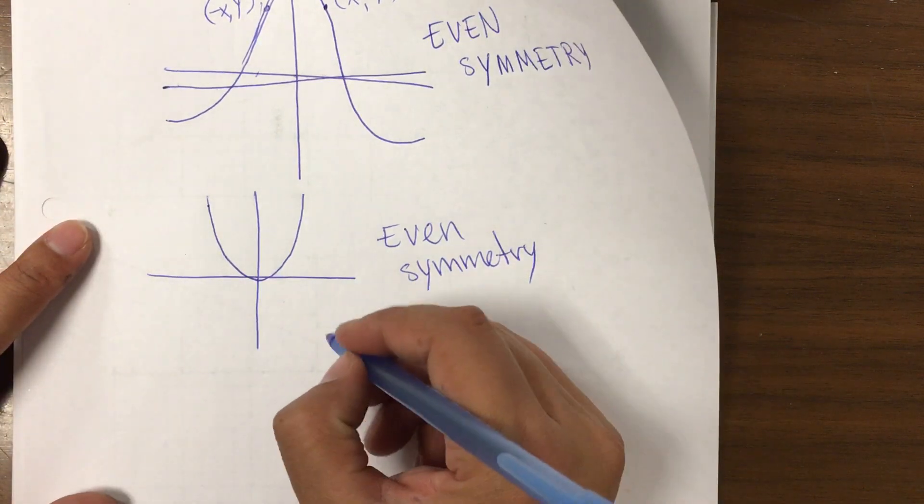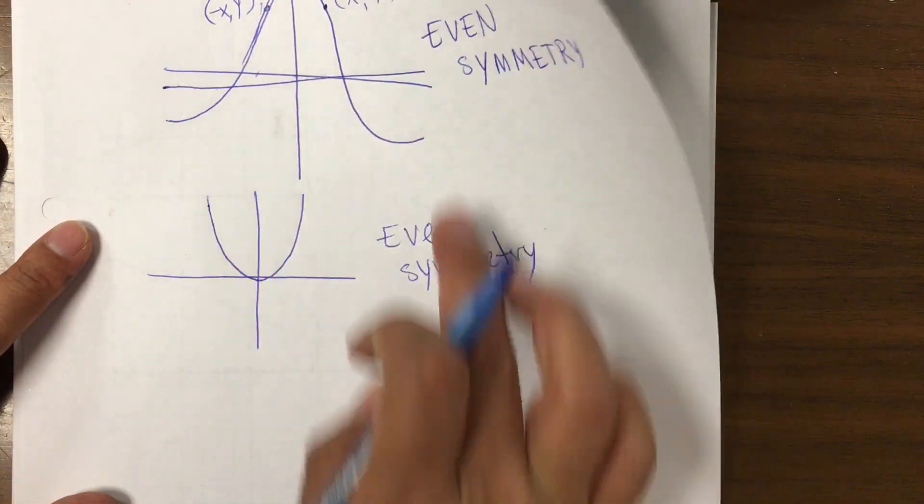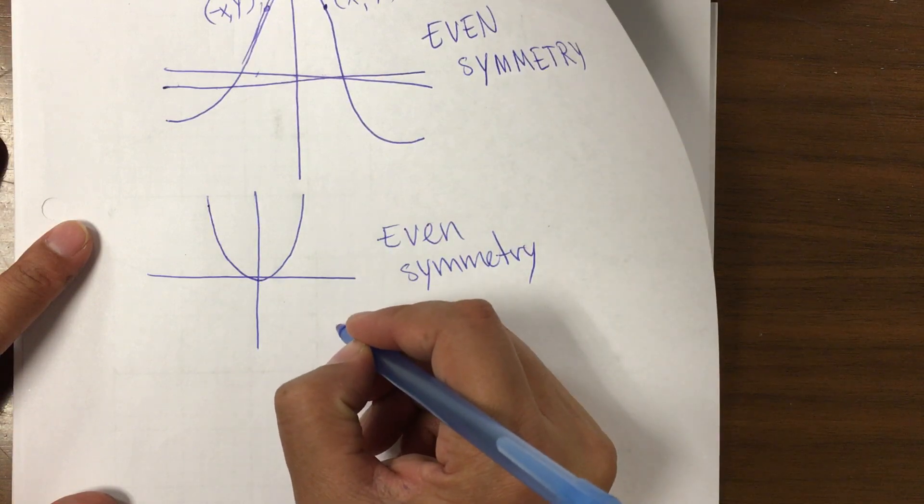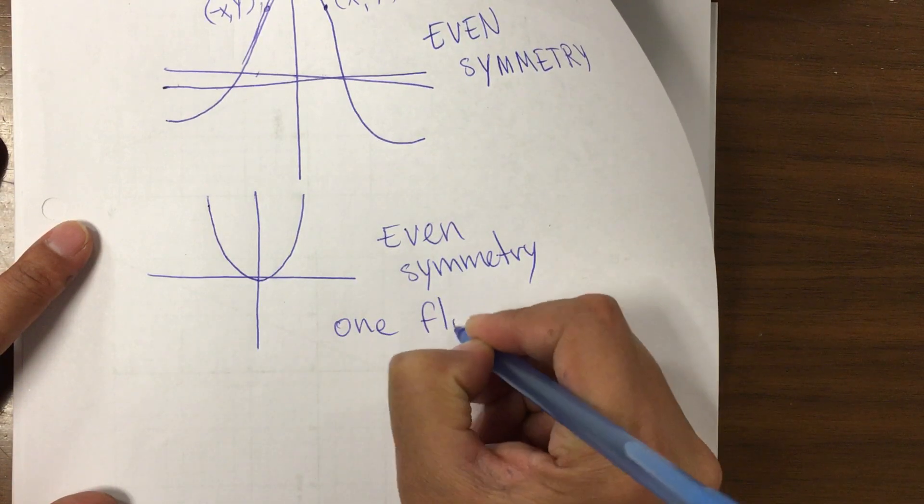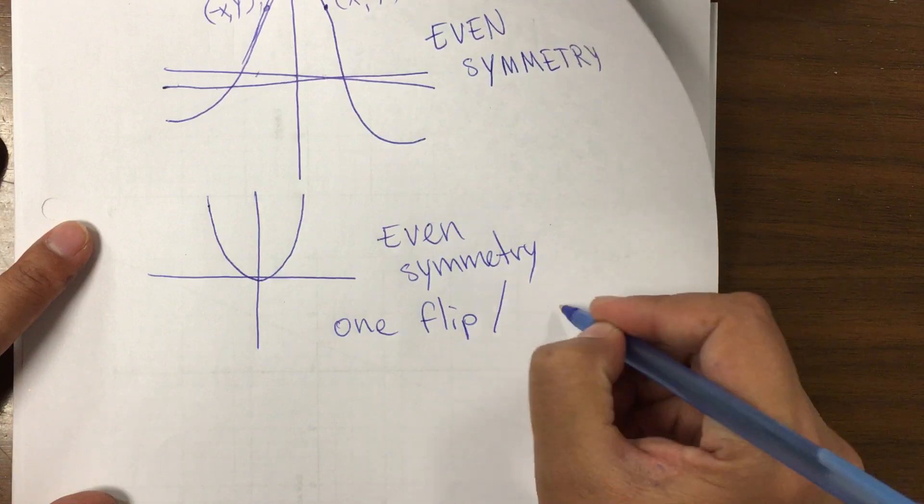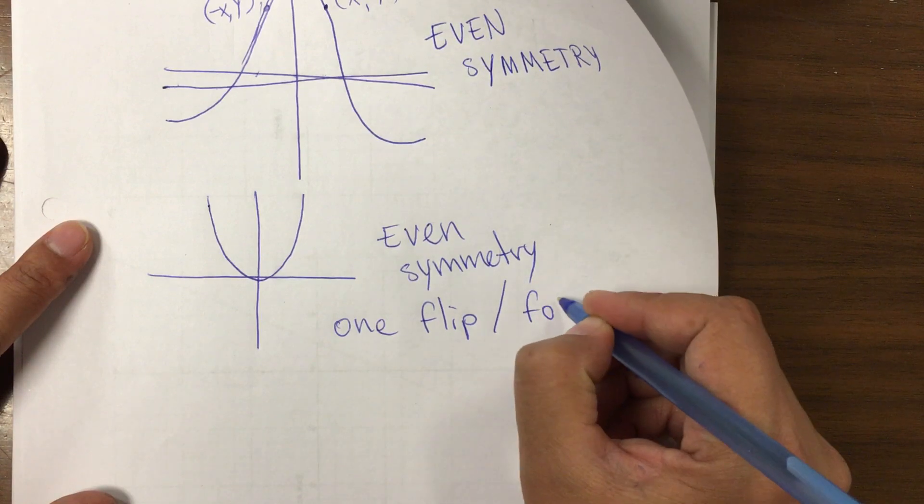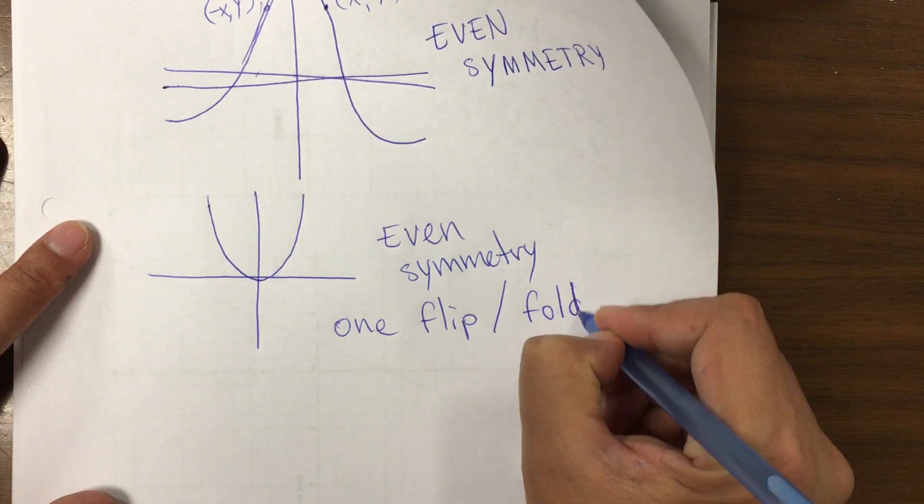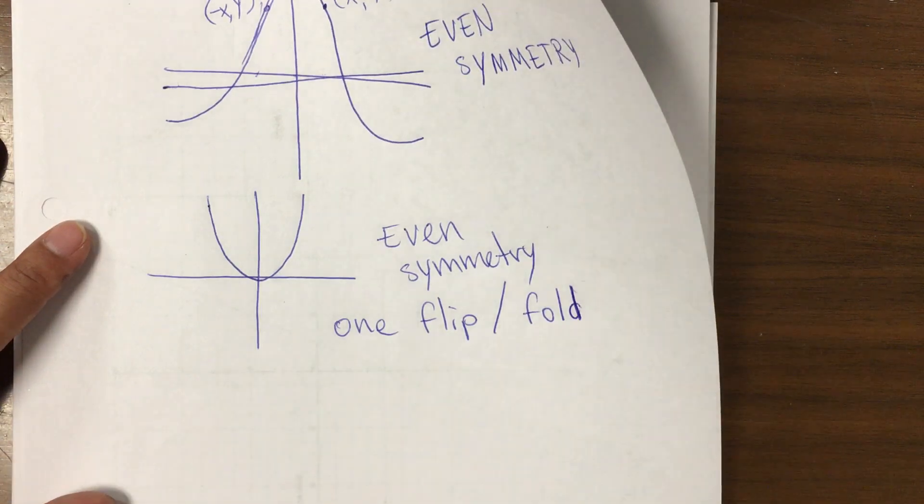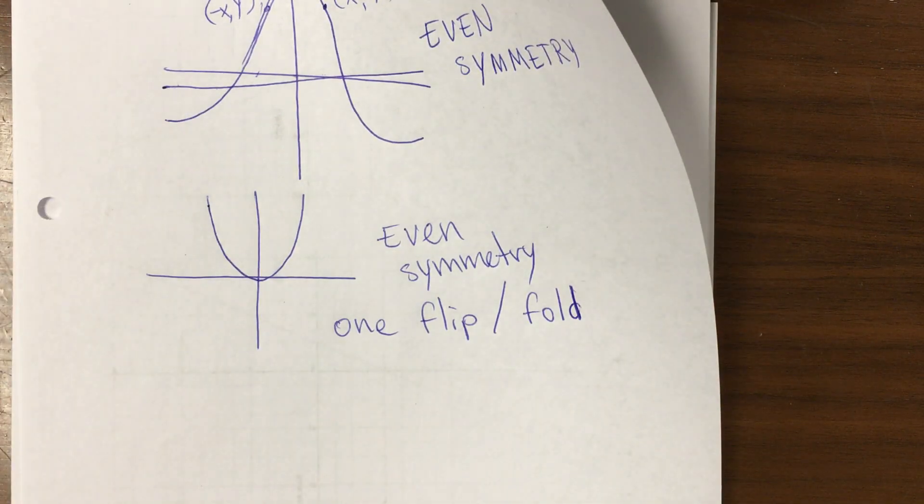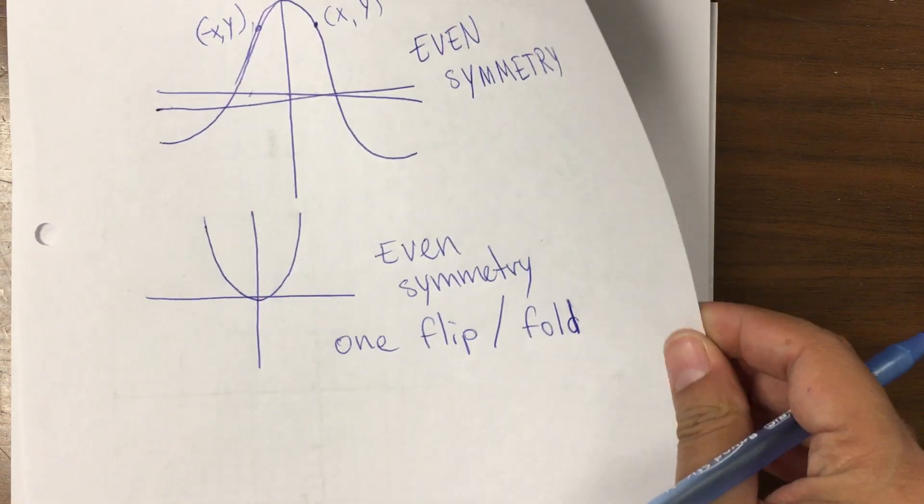We can say that these type of graphs, when we have even symmetry, they have one flip or fold, meaning you only fold once. Take a minute to write that down.